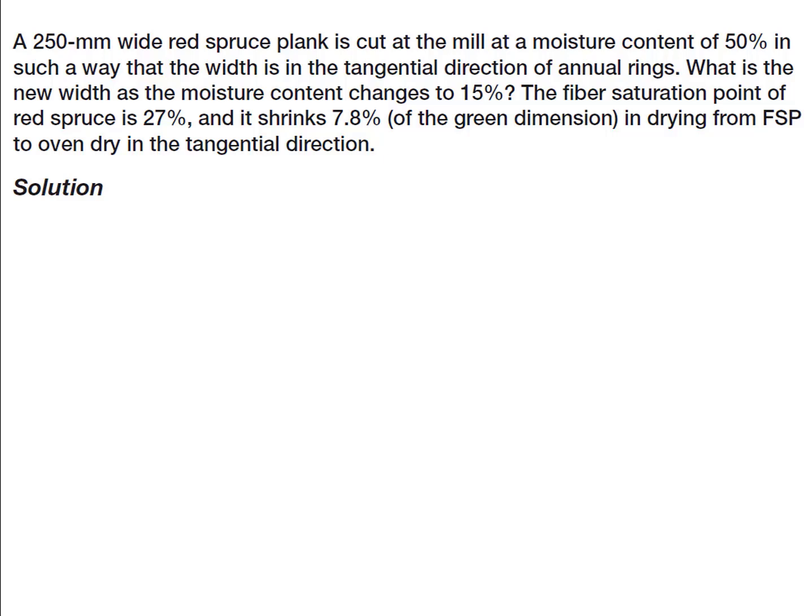Hello everyone. In this video, I will talk about two sample problems related to the moisture content of wood. The first question: a 250 mm wide red spruce plank is cut at a mill at a moisture content of 50 percent, in such a way that the width is in the tangential direction of annual rings. What's the new width as the moisture content changes to 15 percent? The fiber saturation point is 27 percent, and it shrinks 7.8 percent of the green dimension in drying from FSP to oven dry in the tangential direction.